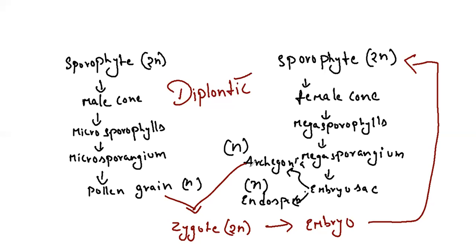The neck of the archegonium of Ephedra is the longest. Gnetum, Ephedra, and Welwitschia are noted for having xylem vessels as exceptions among gymnosperms. The neck of Ephedra's archegonium is notably the longest — that's an important point to remember.